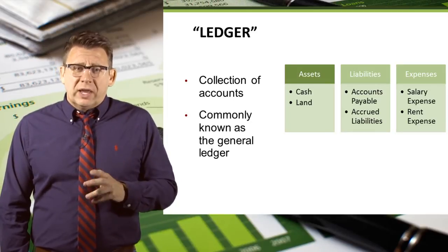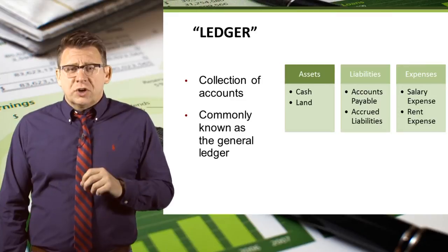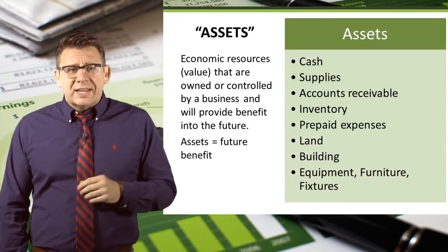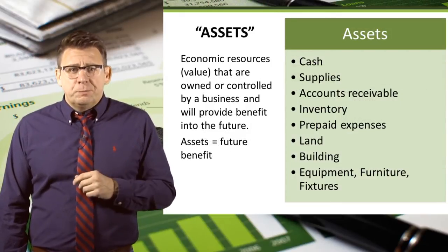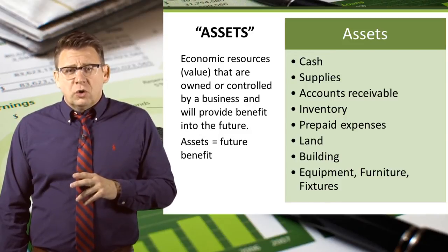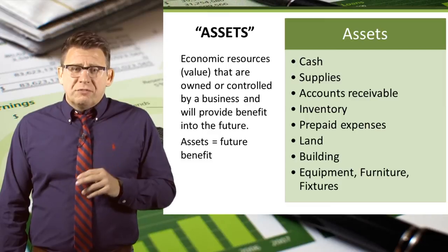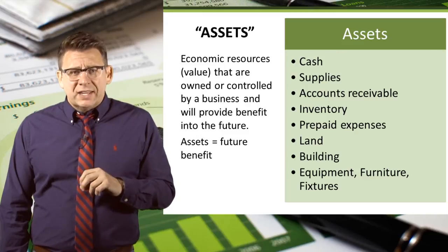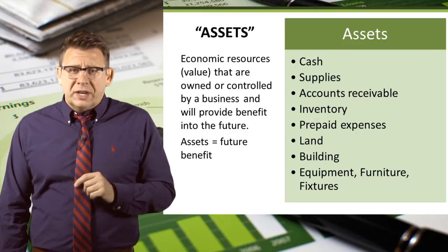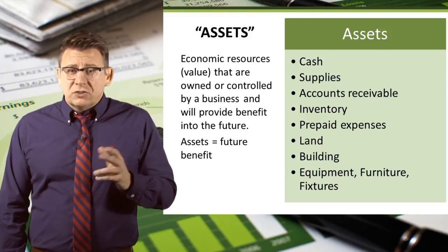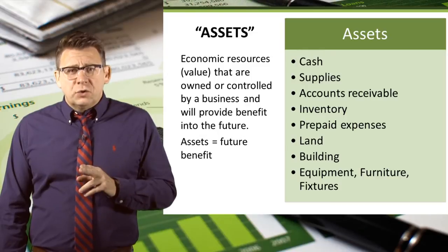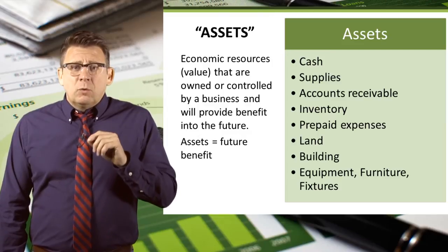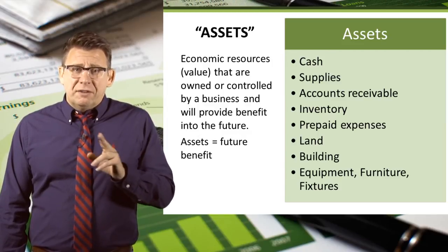Before we end this short video on accounting terms, I would like to revisit a few terms we've learned earlier and define the accounts a little bit better. Assets are economic resources — that means something of value — that are owned or controlled by a business, and they will provide benefit into the future. The key when trying to determine if something is an asset is that assets provide future benefit. Supplies is an asset because we haven't used them up yet; when we do, they will become an expense — supplies expense to be exact — and they will be a past benefit, not a future benefit anymore.